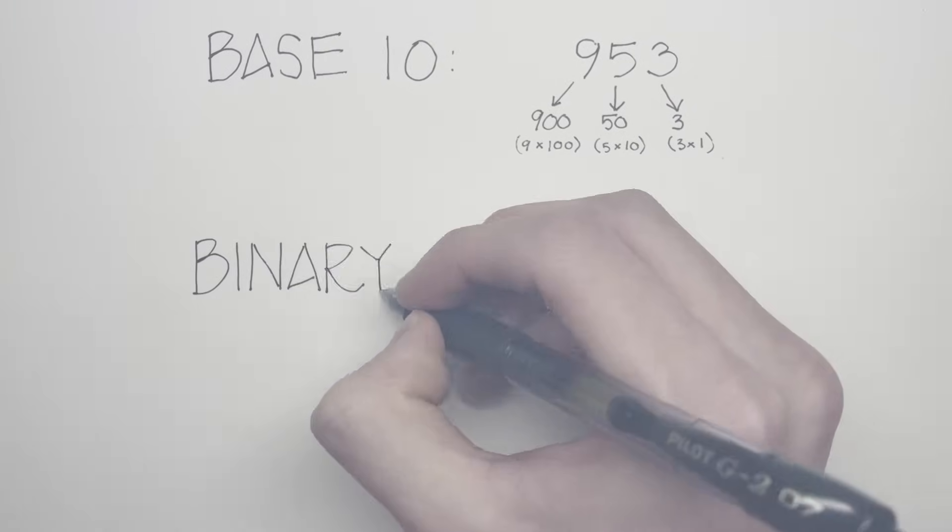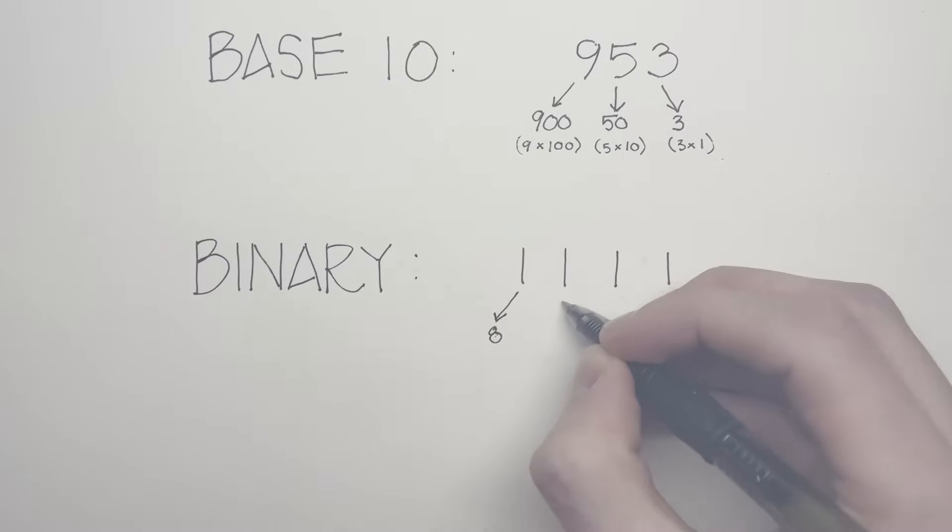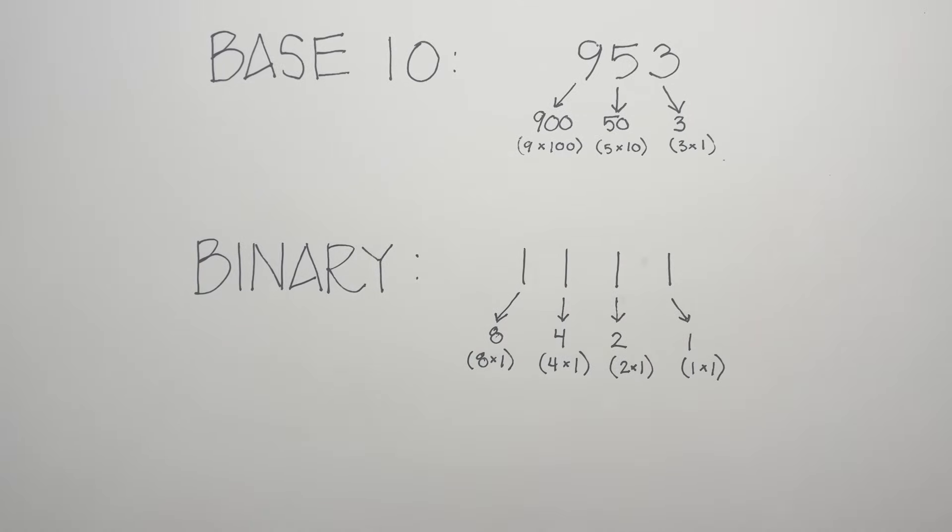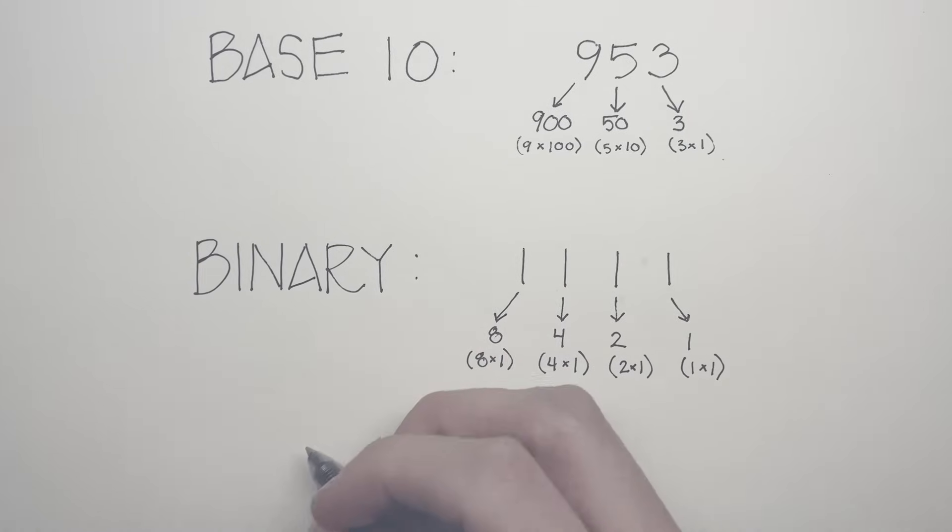Computers, on the other hand, work in binary. In this system, each digit is valued as 2 times the previous. In binary, there are only two digits, 0 and 1.